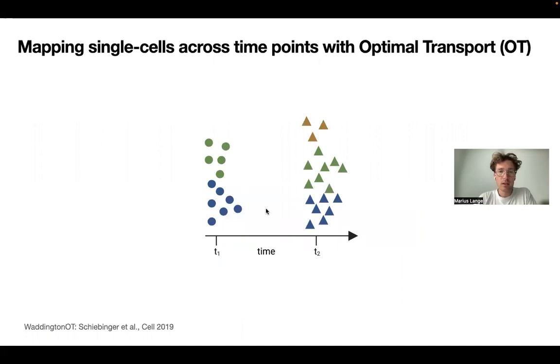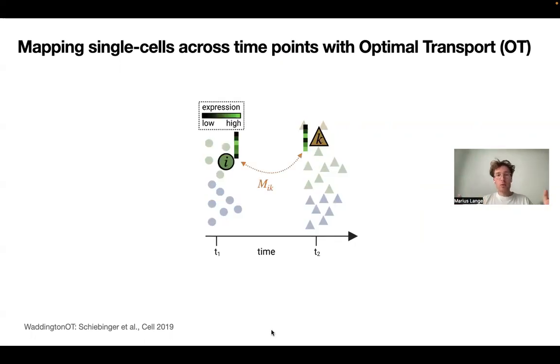So let's start simple. Say we have two samples of cells, usually single-cell RNA-seq, measured at two different time points, one earlier one T1, one later one T2. This is the setting of the Waddington OT paper here from Jeffrey Schiebinger 2019. And basically what we want to do is we want to recover differentiation trajectories between T1 and T2.